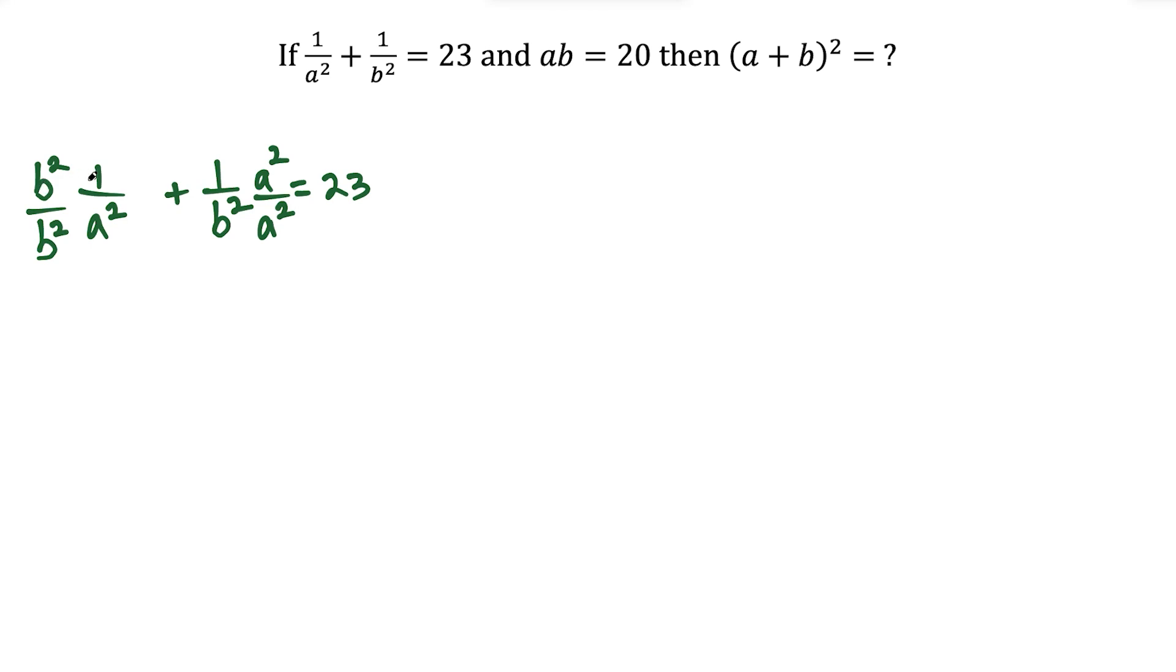So we would have b squared times 1 is b squared, and we're over a squared b squared. And then plus a squared times 1 is a squared, and we're over a squared times b squared.